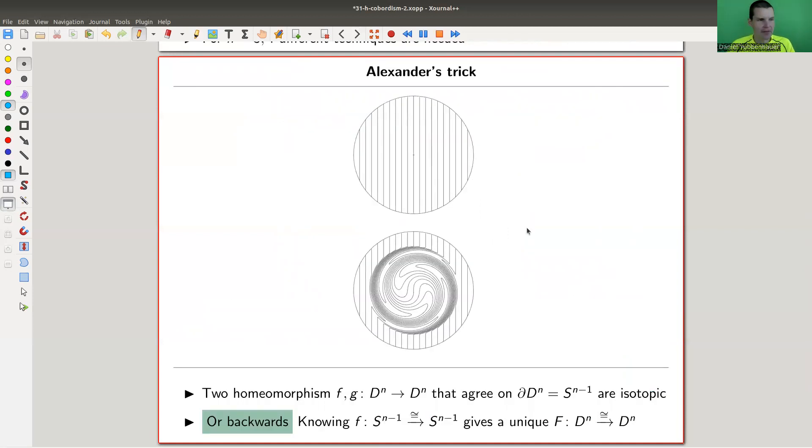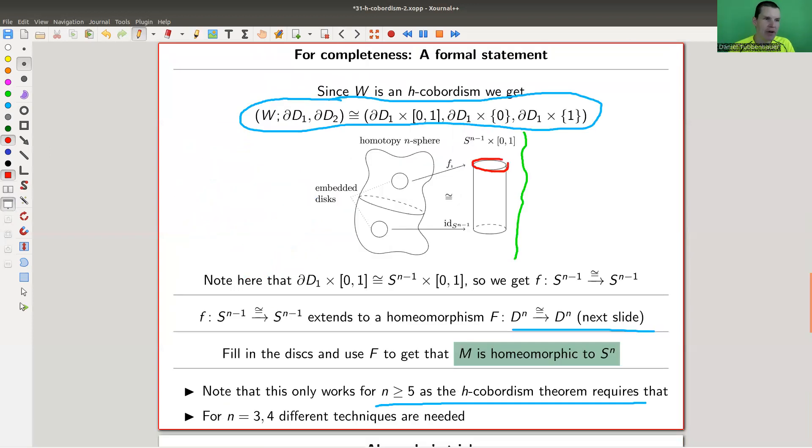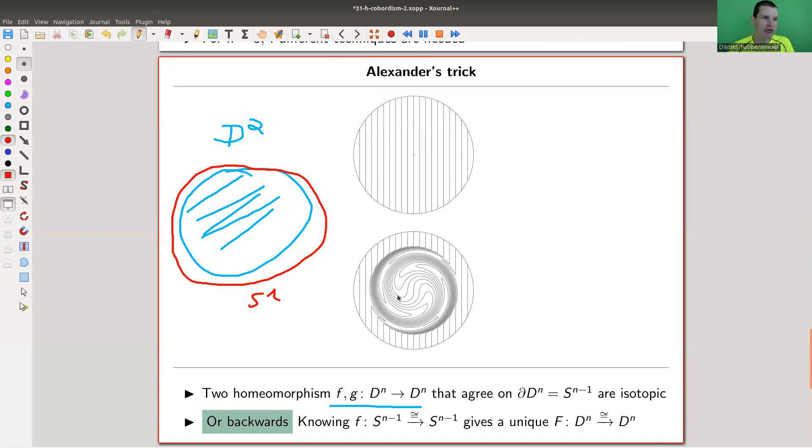Okay, so Alexander's trick is actually a fun thing. It usually goes under this name. I haven't seen another name. But essentially it's a statement that if you have two maps on a disk, so really on this filled beast, D2 in this case, and they agree on the boundary, which is S1, then they're actually isotopic. And you will see in a second what isotopic actually means. So homeomorphisms on disks are determined by their boundary, if you want. Or backwards, knowing them at the boundary, you can extend it uniquely to the disk. And that's essentially what happens here. You kind of know it at the boundary because we have punctured it here, and then we can extend it uniquely to the disk.